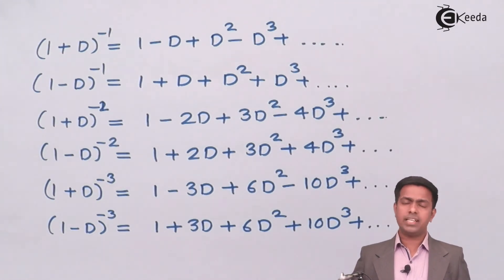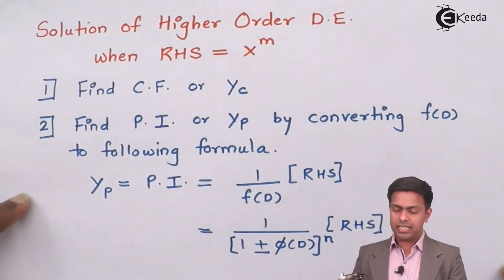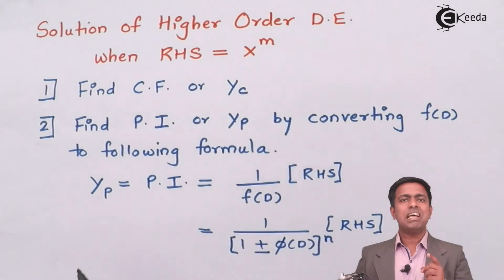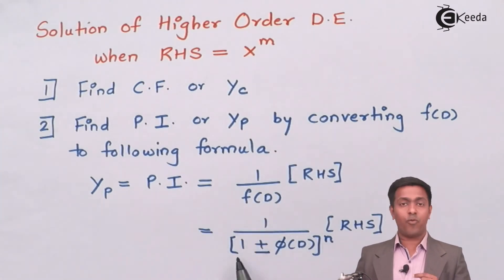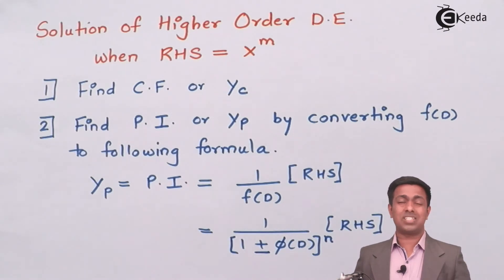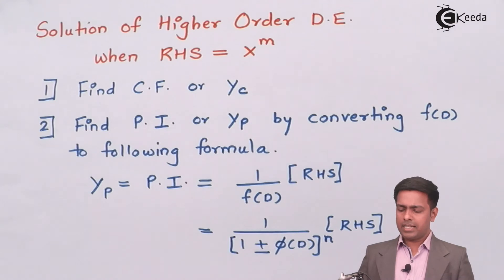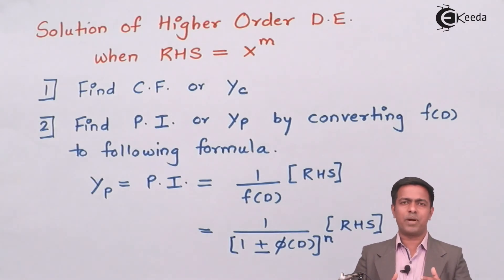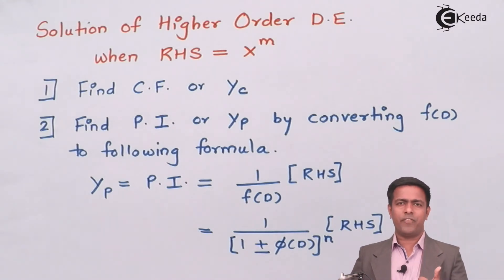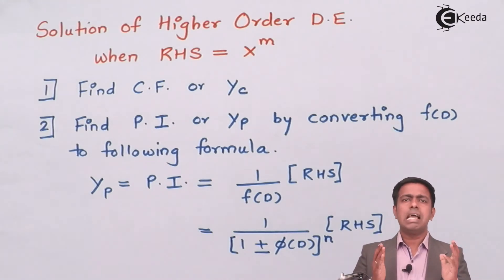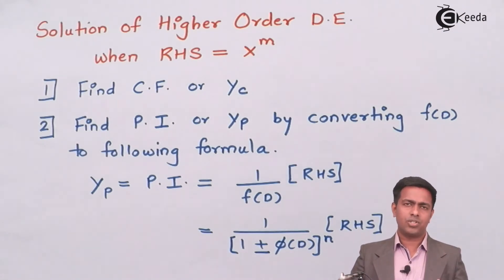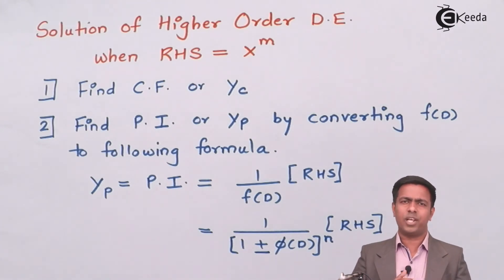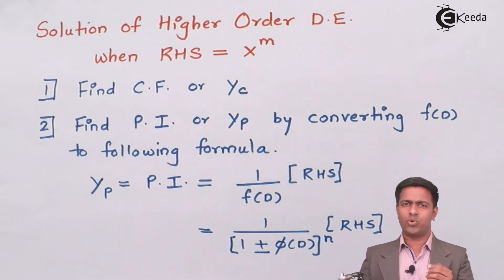To summarize: whenever the right hand side is a polynomial or x raised to m, bring the denominator into the form (1 ± φ(D)) raised to n, use one of the six formulas to expand, multiply each term of the series by the right hand side, and get the particular integral. After finding both the complementary function and the particular integral, add them together to get the complete solution of the linear differential equation.